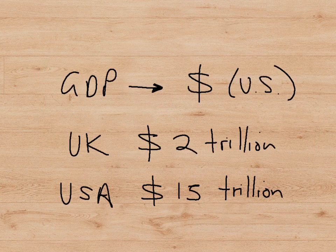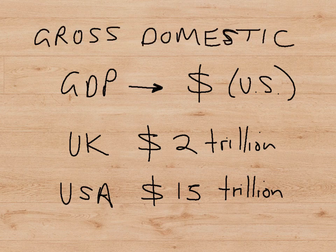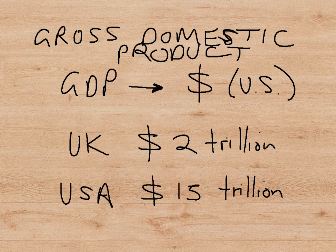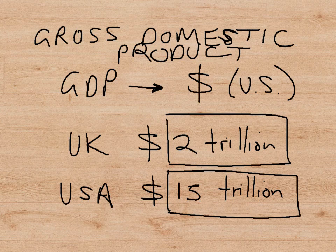GDP stands for gross domestic product. The gross domestic product of the UK is very roughly measured in US dollars — all GDPs are measured in US dollars for ease of comparison. The gross domestic product of the UK is roughly 2 trillion US dollars, whereas the gross domestic product of the USA is roughly 15 trillion US dollars. A trillion is 1,000 billion, and a billion is 1,000 million. So the USA economy can be said to be roughly seven times the size of the UK economy.